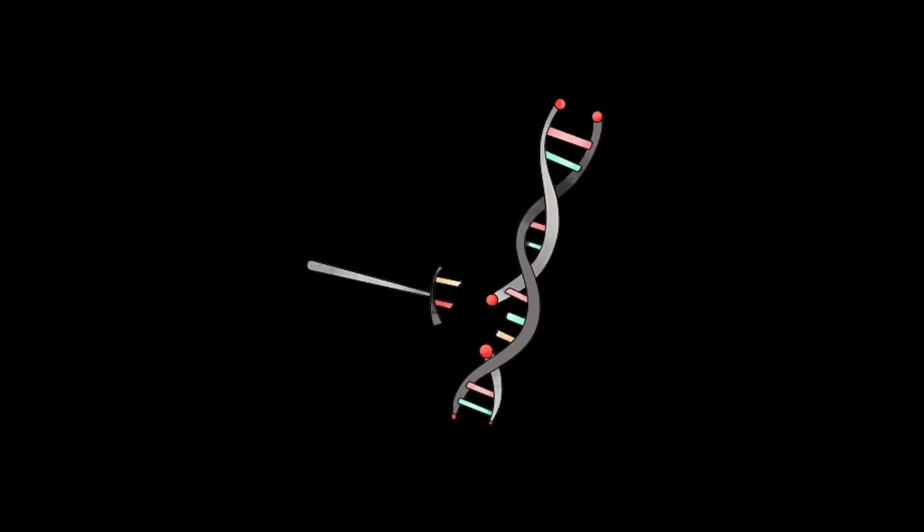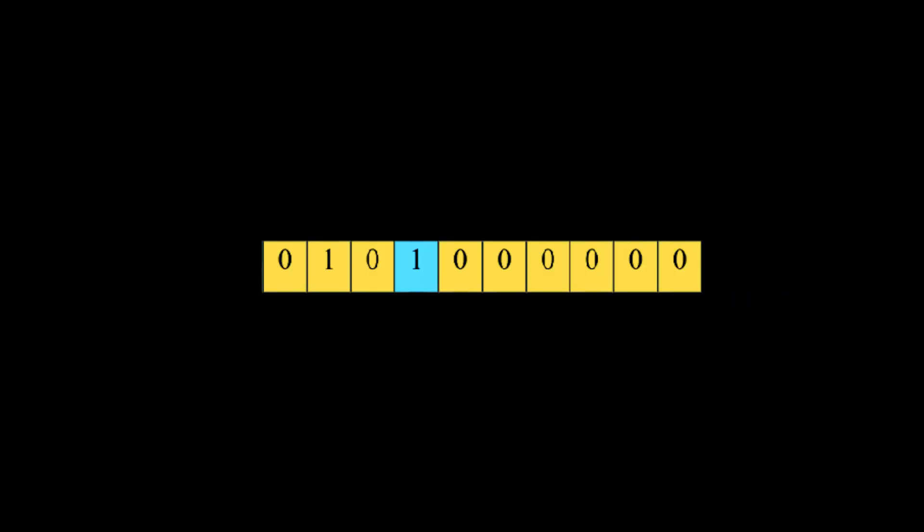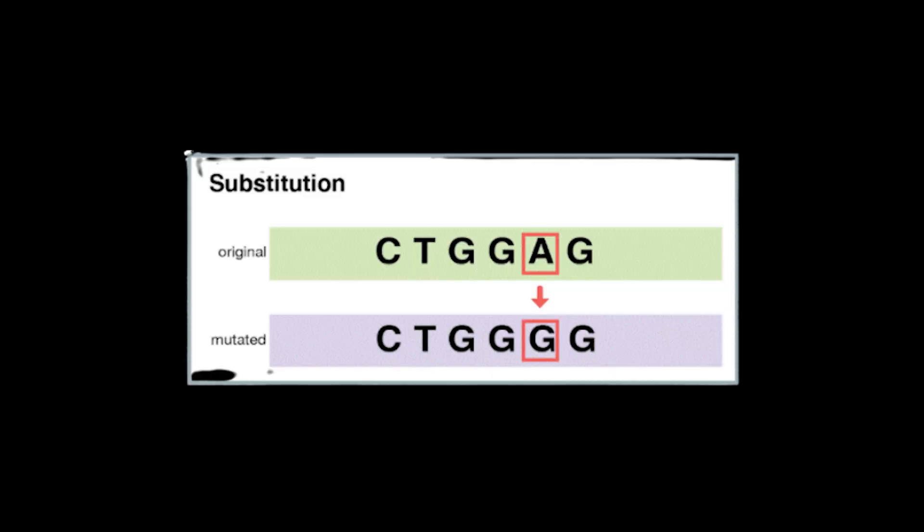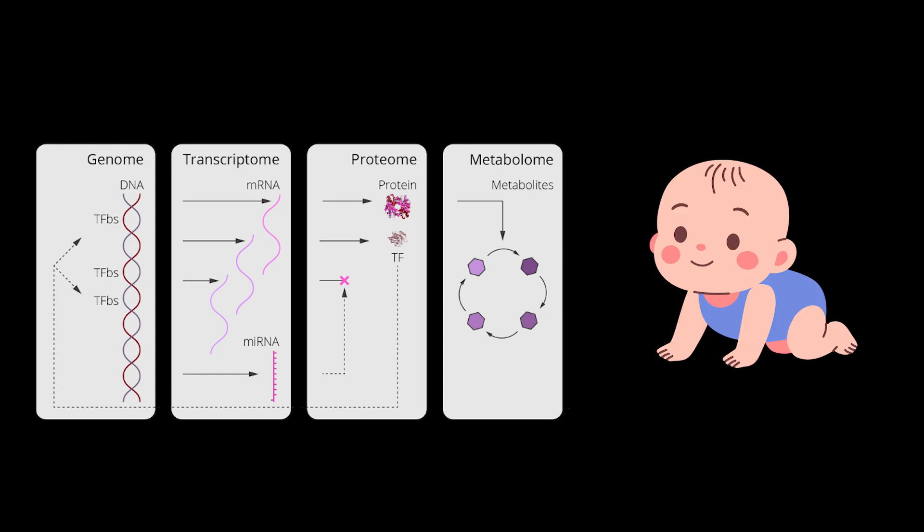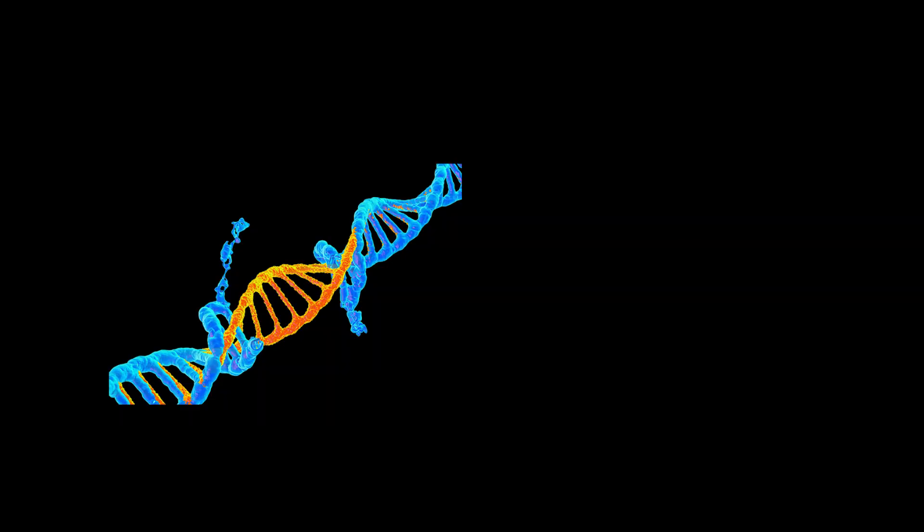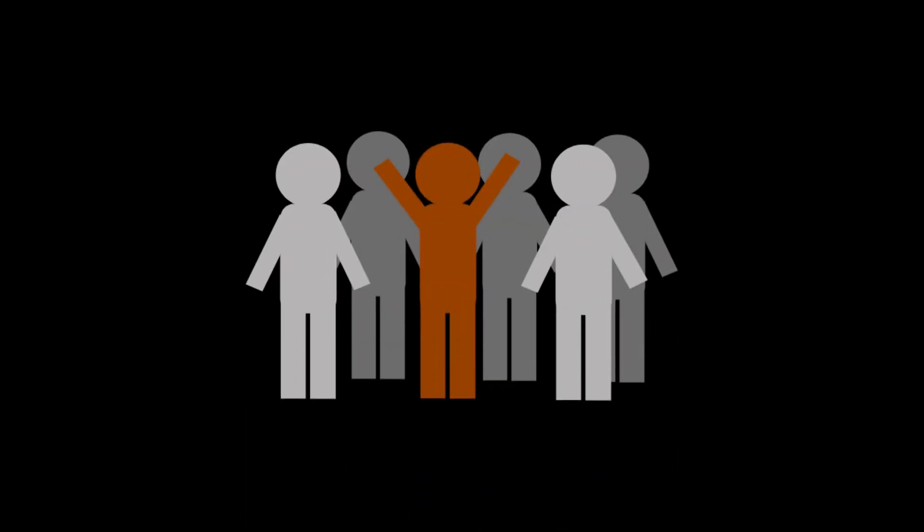Sometimes mistakes slip in. Mutations. A mutation is a change in the DNA sequence. Mutations can be a single letter flipped, letters deleted, extra letters inserted, entire gene sections duplicated, moved, or reversed. Some mutations do nothing. They're neutral. Some break proteins, causing disease. Some improve function, providing the raw material for evolution. Mutations are the reason life changes over generations. They are small errors that sometimes lead to big differences.